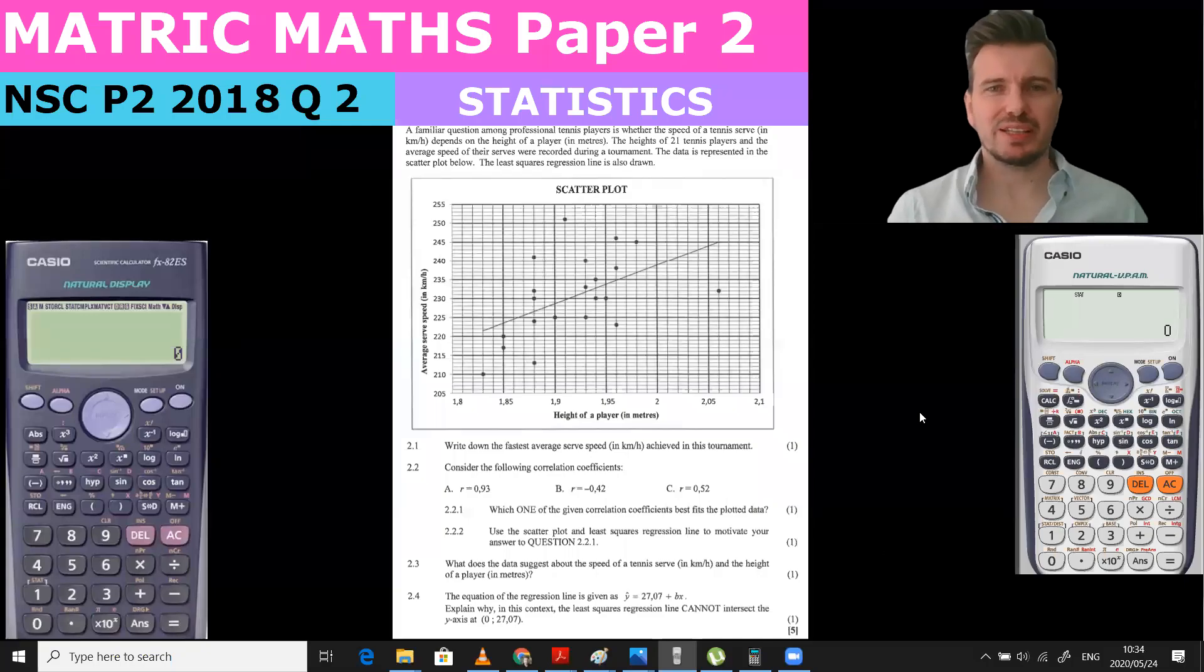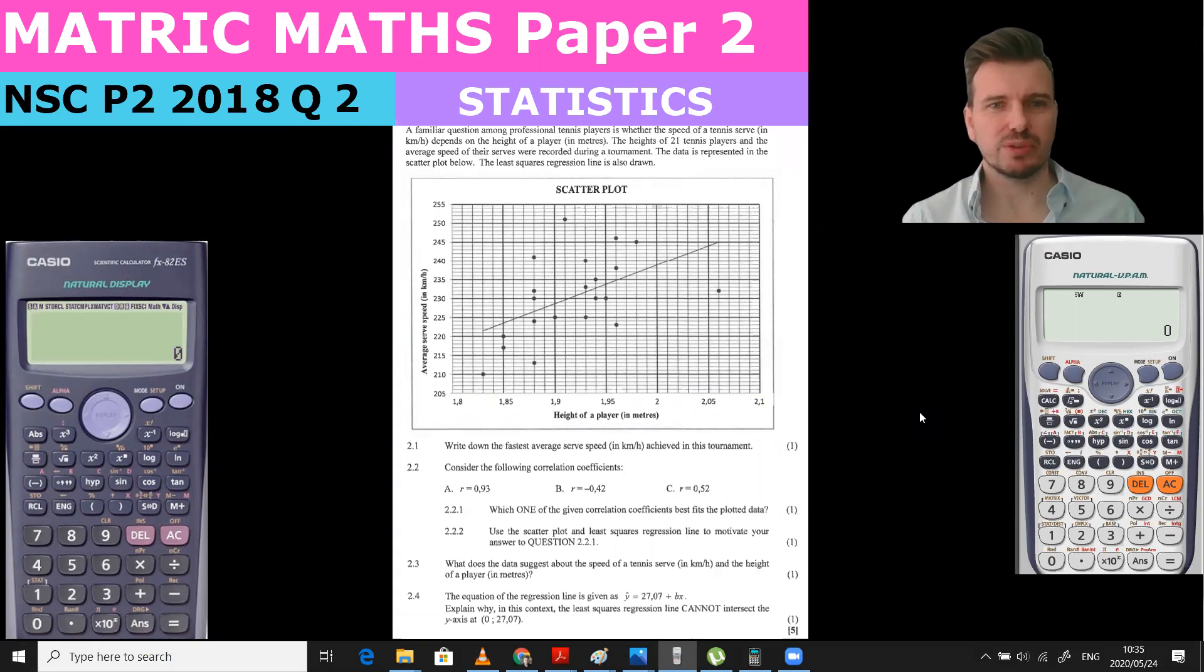Hello Matrix and welcome again. Today we are doing question 2 of our paper 2 2018 and it's another statistics question. We are looking at correlation. We've got the average serve speed of a tennis player and the height of a tennis player, and they looked at the heights of 21 players and the average speeds of the serves that were recorded. These were amongst professional tennis players and we have a least squares regression line.